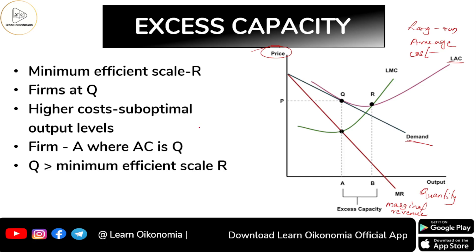To find equilibrium, look for the point where MR equals MC and MC cuts MR from below — this is the equilibrium point where both the necessary and sufficient conditions are met. The green LMC (long-run marginal cost) curve is also U-shaped and intersects the MR curve at the equilibrium point.